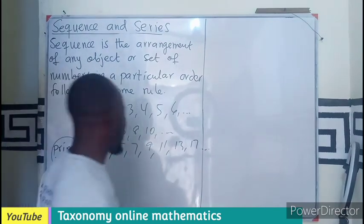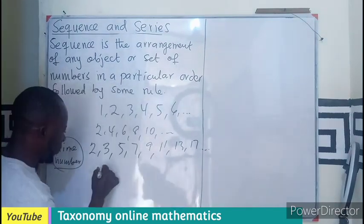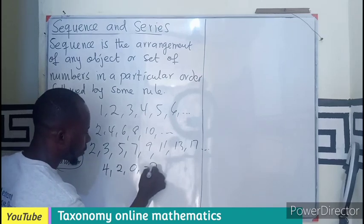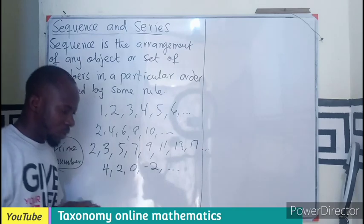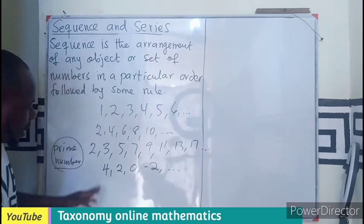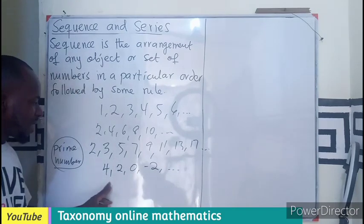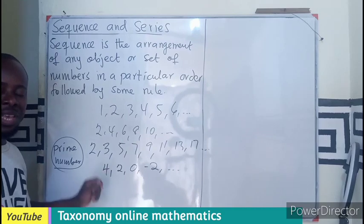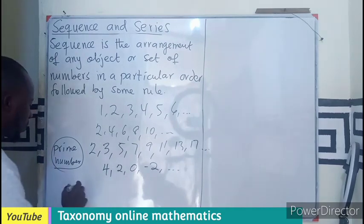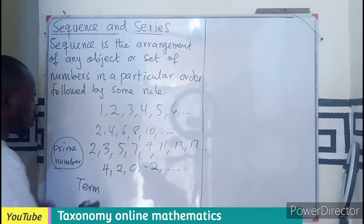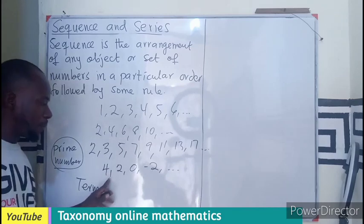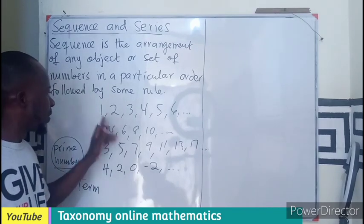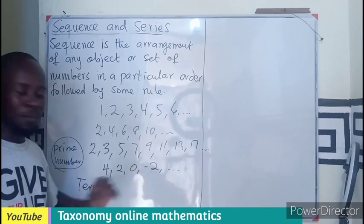Now, when we have a set of numbers like these, each of them is referred to as a term. So this is the first term, second term, third term, and the fourth term — and similarly for the rest in that order.